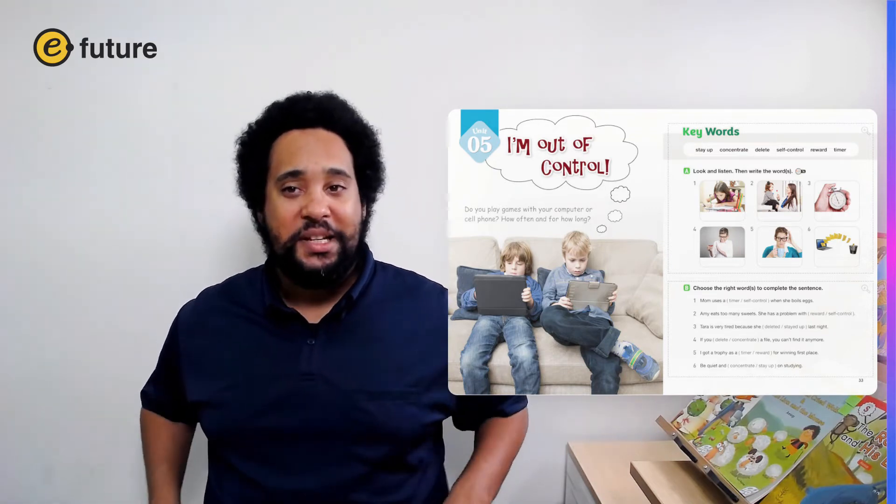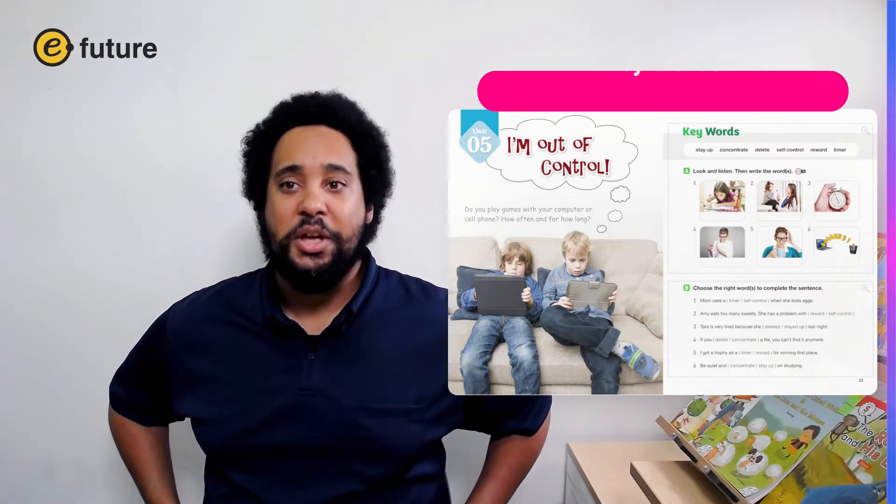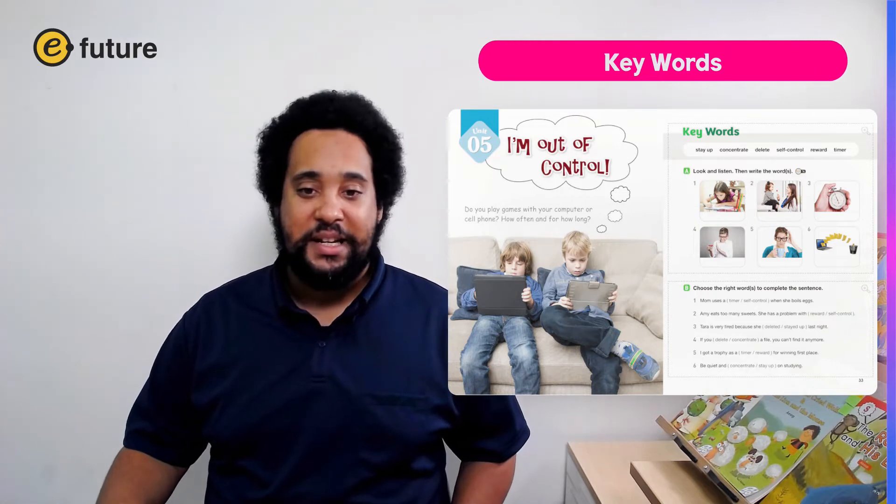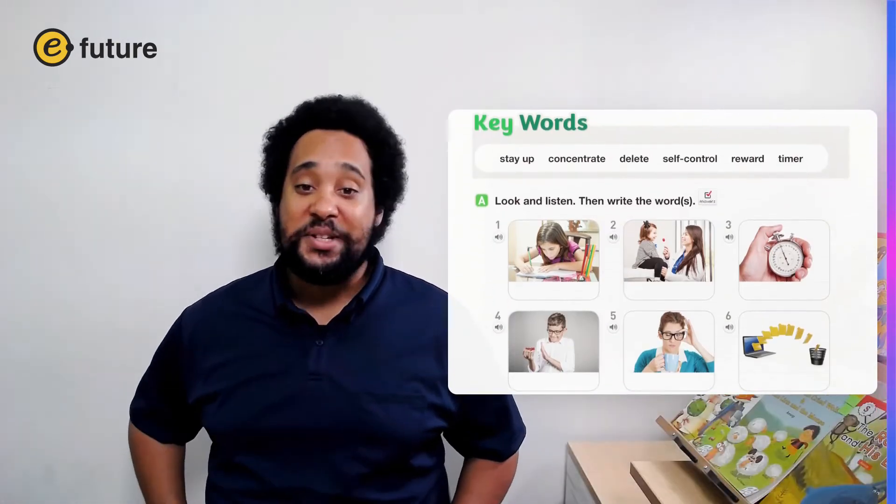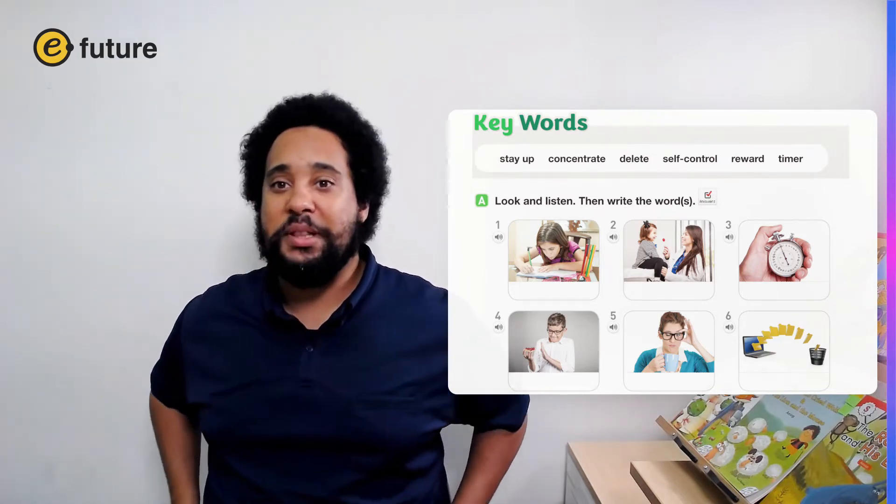So let's read together. Do you play games with your computer or cell phone? How often and for how long? So keep thinking about these questions and we'll talk about them later. Okay, before we continue, let's talk about our key words. So let's read the key words in the box at the top of the next page. Can you see our six keywords? Good. Let's read them together.